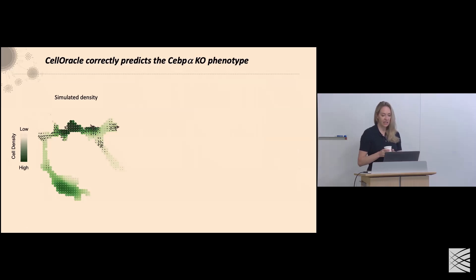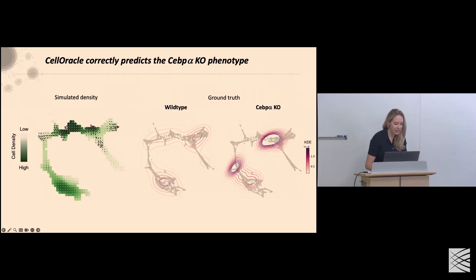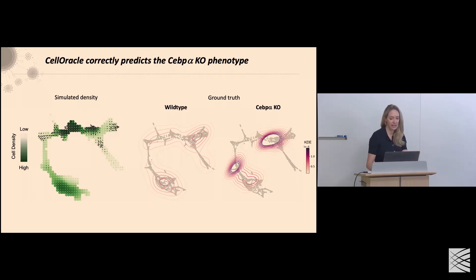Getting into validation with the CEBP-alpha knockout ground truth data: Cell Oracle predicts we will lose differentiation down these granulocyte lineages and accumulation of cells within progenitor states — and that's exactly what we see in the ground truth data. Cell Oracle also predicts a slight acceleration down the erythroid branch, and we do see accumulation of cells there as well. Cell Oracle also shows vectors shooting down this differentiated lineage, suggesting that knocking out CEBP-alpha at later stages would show acceleration of differentiation — something we'd need a conditional knockout to test.